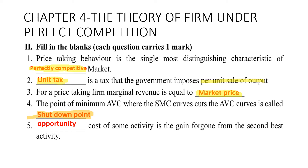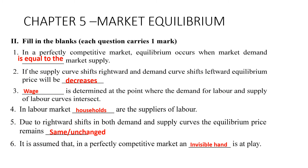Fifth: opportunity cost is the gain foregone from the second-best activity. We call the gain which is foregone from the second-best activity opportunity cost. Moving to chapter five: market equilibrium.